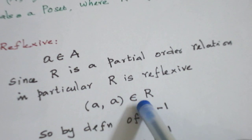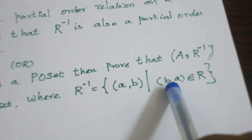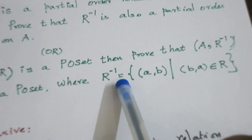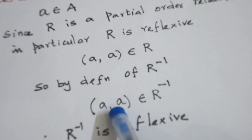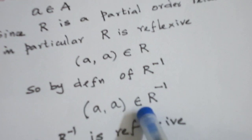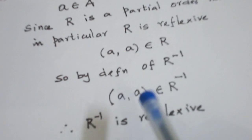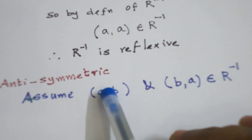Since R is reflexive, (a, a) belongs to R. Now whenever (a, b) belongs to R, its reverse (a, b) belongs to R inverse. So when (a, a) belongs to R, its reverse (a, a) belongs to R inverse. This is what we are expected to prove. So R inverse is reflexive.